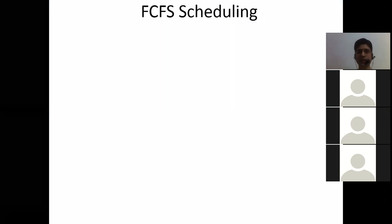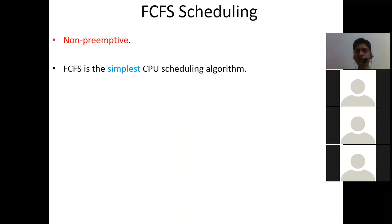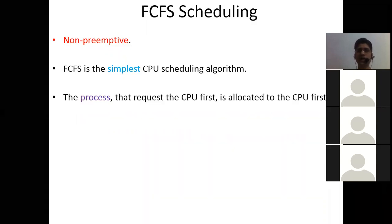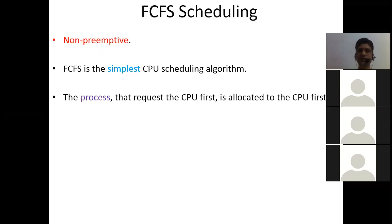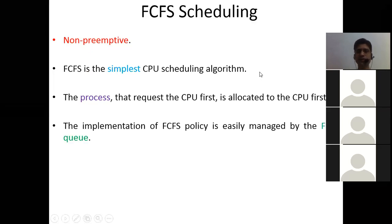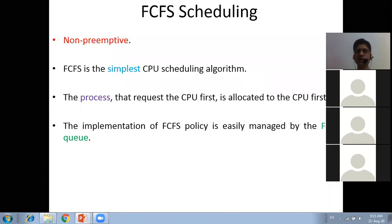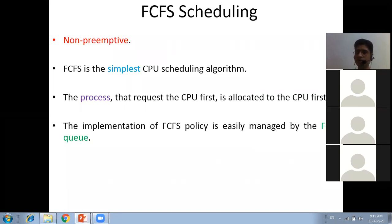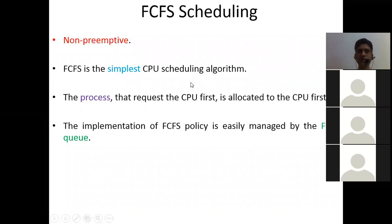FCFS scheduling uses a FIFO queue and is of the non-preemptive category. Once a process starts executing, it must complete or wait indefinitely. This is the simplest CPU scheduling algorithm. The process that requests the CPU first is allocated to the CPU first. The implementation of FCFS policy is easily managed by the FIFO queue — first in first out queue.